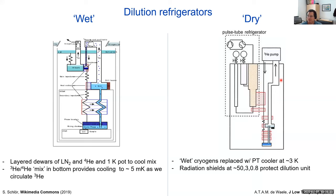The second question was, can you mix wet and dry fridges? Yes — you can get a dry fridge with a liquid nitrogen pre-cool circuit; that is an option you can commercially buy. You wouldn't usually mix helium-4 and the pulse tube, because it's kind of like having a hat on top of a hat. But liquid nitrogen pre-cool circuits and similar things exist that you can buy for these fridges, making a mixed wet-dry fridge.